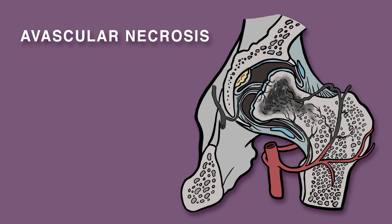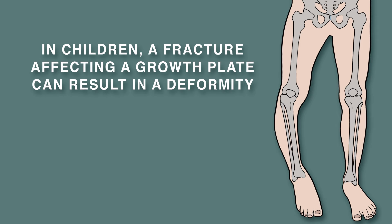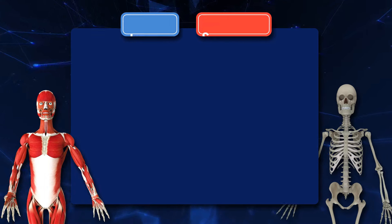Another potential complication is avascular necrosis, or bone death. This occurs when a bone loses its blood supply and dies. In the case of children, a fracture affecting a growth plate can result in a deformity.